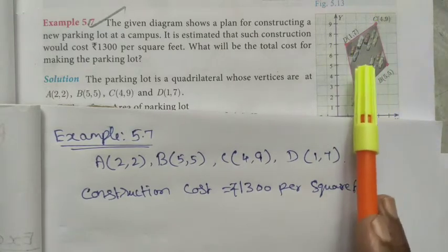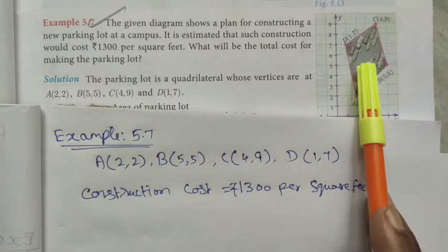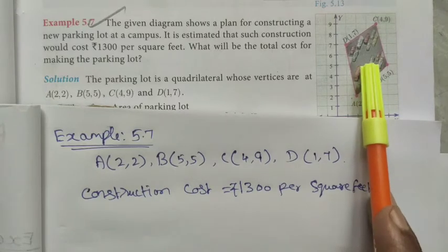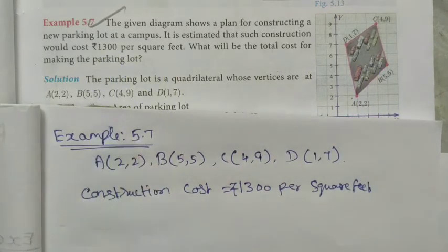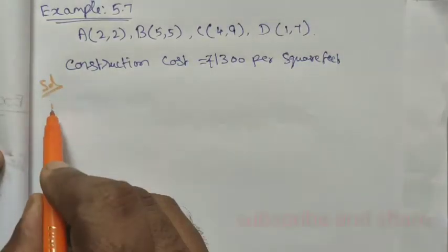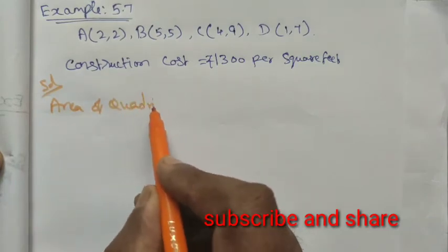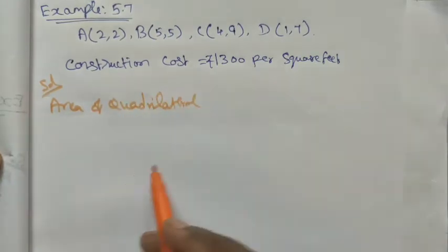So the parking lot is given in the diagram. It is in the order A, B, C, D. So this is a quadrilateral. We want to find out the area of this quadrilateral and then we have to multiply this area into 1300.